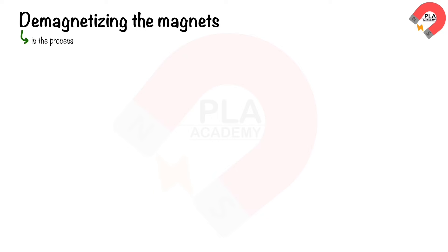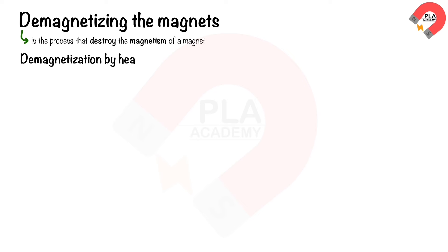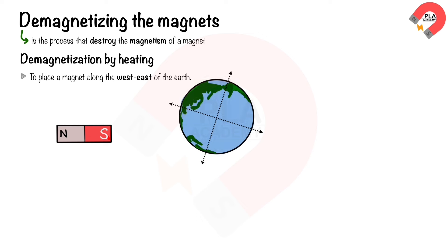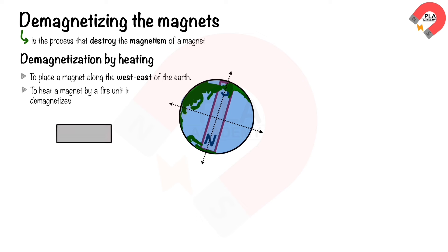Demagnetizing the magnets: demagnetization is the process that destroys the magnetism of a magnet. There are three ways to demagnetize a magnet. Demagnetization by heating: place a magnet along the west-east direction of the Earth — this is because the Earth is a magnet and its poles are along the north-south. Then heat the magnet with fire until it demagnetizes.